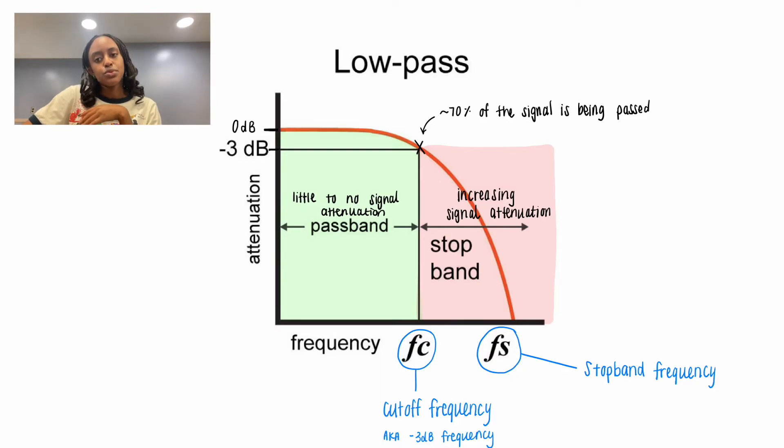The cutoff frequency is also referred to as the negative 3 dB frequency, because this is how much attenuation is experienced at this frequency. This corresponds to about 70% of the signal being passed. As a result, it is often useful to expand the pass band to prevent your desired signal from being attenuated.